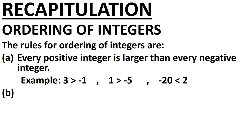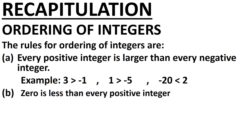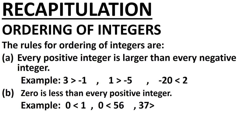The next rule we have done is: 0 is less than every positive integer. For example, 0 is less than 1, 0 is less than 56, 37 is greater than 0. So 0 is less than every positive integer.